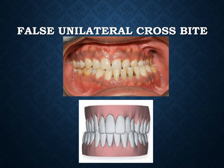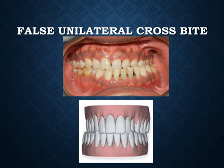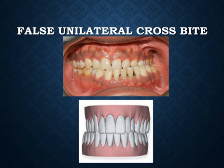Unilateral posterior crossbite can be divided into false and true types. The false unilateral posterior crossbite is caused by narrowing of the maxilla or widening of the mandible, leading to a cusp-to-cusp relation. The patient then deviates the mandible to one side during the path of closure to achieve maximum intercuspidation, resulting in a false unilateral posterior crossbite.